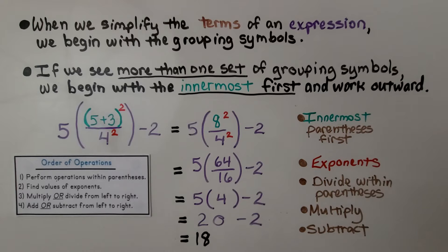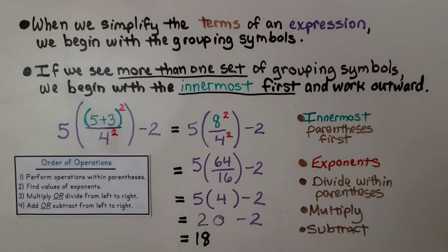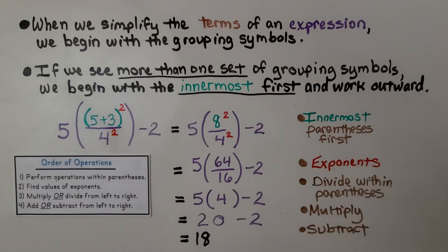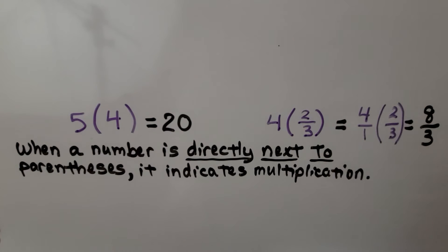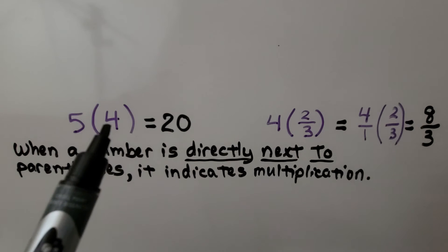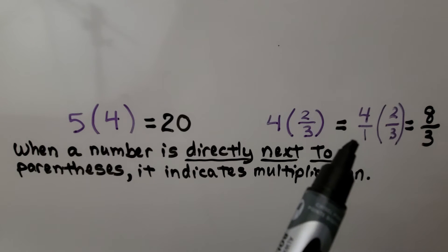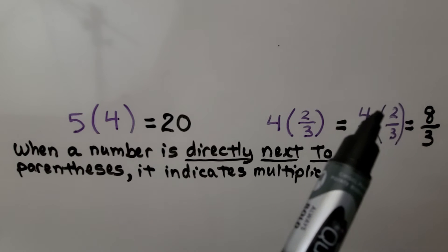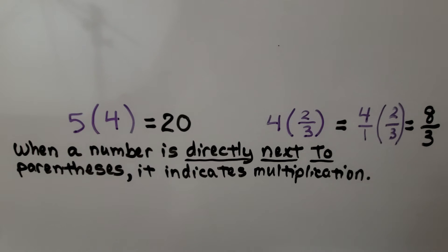If we see more than one set of grouping symbols, we begin with the innermost first and slowly work outward. Remember, when a number is directly next to the parentheses, it indicates multiplication. Here we have 5 times 4, which is 20. Here we have 4 times 2 thirds — we write 4 as 4 over 1 and multiply: 4 times 2 in the numerators gives 8, and 1 times 3 gives 8 thirds.